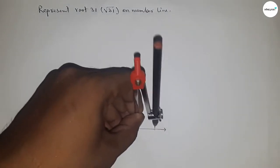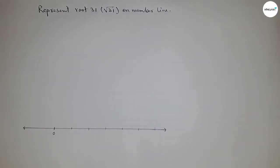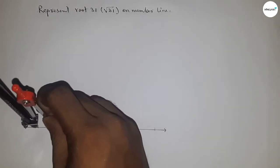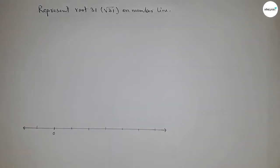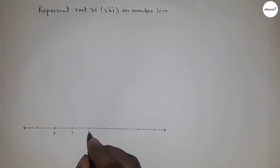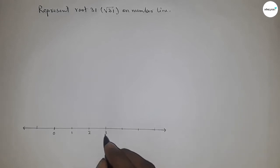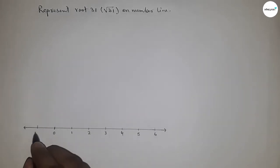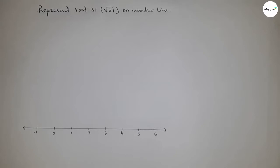You can take another length to mark the line. So this is one, two, three, four, five, six and so on, and on the other side minus one and so on.